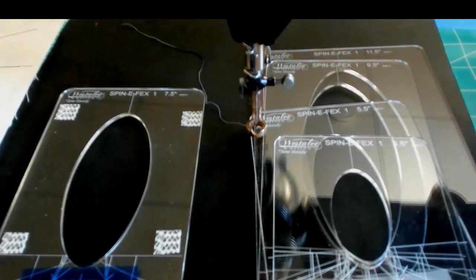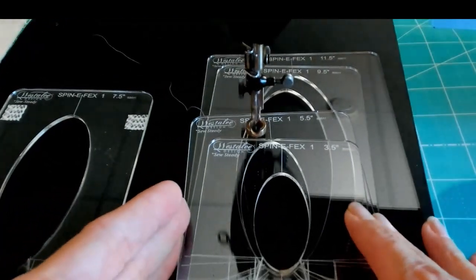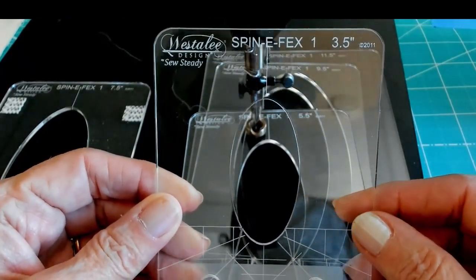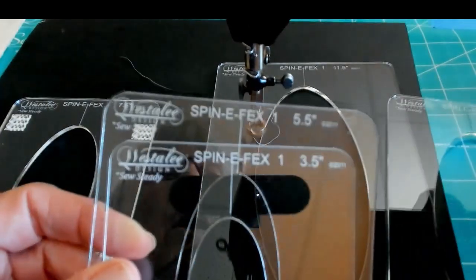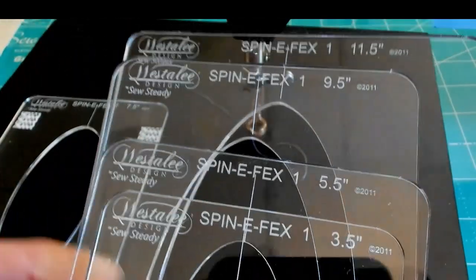So we're just going to go ahead and start with the basics. I'll show you the basics. I'm going to show you each set, the sizes in each set. And then we're going to make a stitch out of each set. So what I've got here, since we're going to start at number one, is the spin effects one template, which comes in a three and a half, five and a half, seven and a half, which is the one I'm going to use today, nine and a half, and eleven and a half inch size.